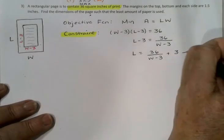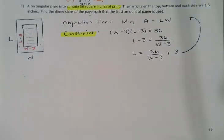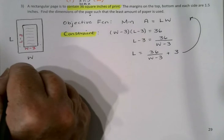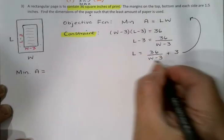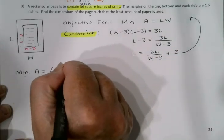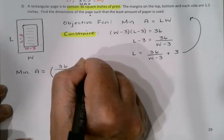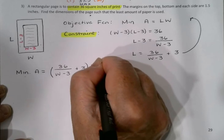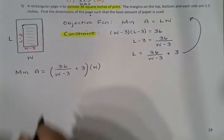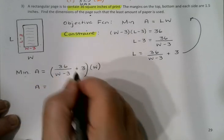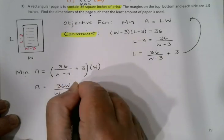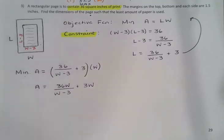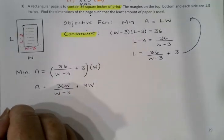There's my constraint, and I'm going to plug that back into my objective function to make myself have just one independent variable. So my goal is to minimize the area function, which is now the length times the width. If I distribute the W, that would give me 36W/(W - 3) + 3W, and I'm going to need to do a first derivative test on this.